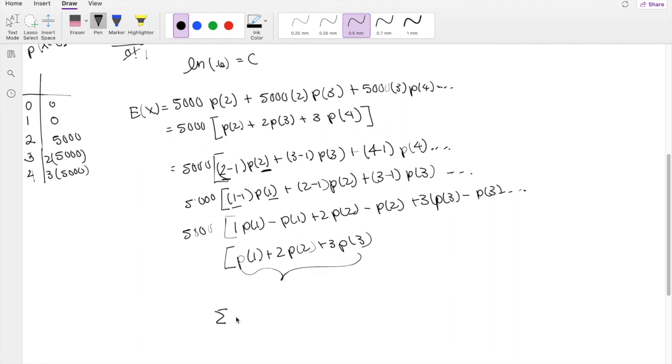This part right here is exactly our expectation, because our expectation is just x times probability of x, summing up from i equals 1 to infinity. Because then you can see, if we use this formula, you're going to get 1 times probability of 1 plus 2 times probability of 2, and so on. So this is exactly our expectation of x.